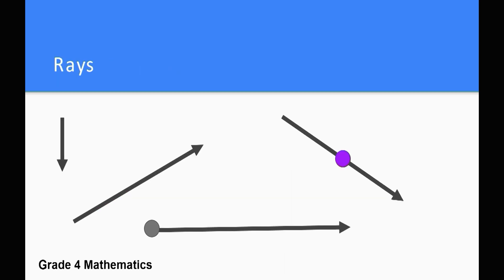Rays combine parts of both a line segment and a line. A ray is a line that has one end or stopping point but goes on and on in the other direction. An arrow is used to show that the ray keeps going. Rays have an end point and can have other points on them. Draw a ray on your paper.